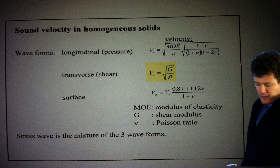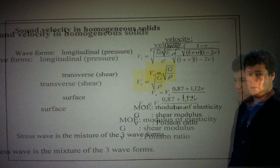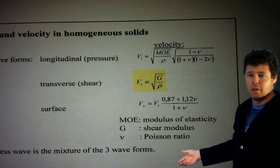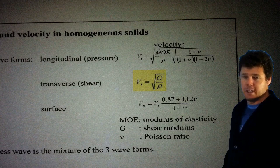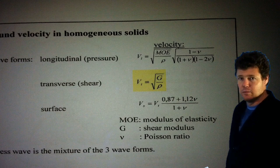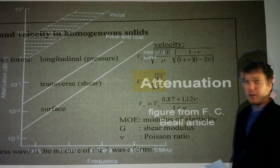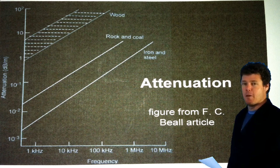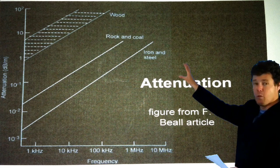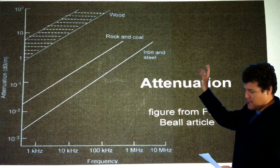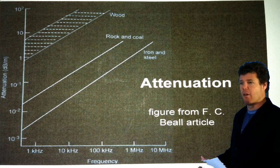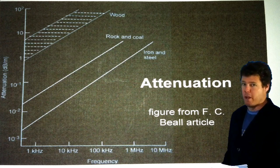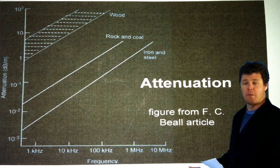It says that a stress wave is a mixture of three waveforms, so this could really be our equations that prove or disprove the effect of wood on electric guitar tone. Here we have a graph that shows the attenuation in dB per metre. Wood is up the top and it's a wide textured area, which indicates that there are a range of frequencies that will be attenuated with various pieces or types of lumber.